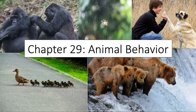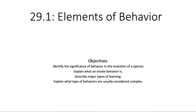We first started off talking about what an animal is — some evolutionary guidelines, adaptations, body plan. In Chapter 26, different phyla. Then we looked into the body systems. And now we are going to talk a little bit about animal behavior, as far as how they are going to use those systems and be able to behave. So 29.1, we are going to be looking at the elements of behavior.